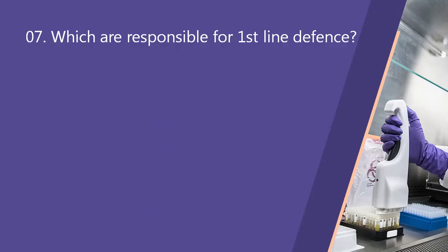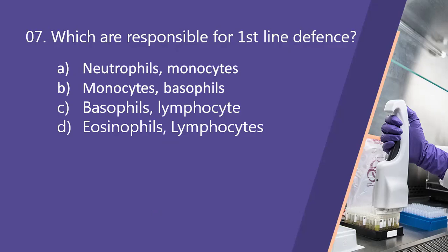Next question: which cells are responsible for first line defense? Option A, neutrophils and monocytes. Option B, monocytes and basophils. Option C, basophils and lymphocytes. Option D, eosinophils and lymphocytes. The right answer is option A, neutrophils and monocytes. Neutrophils help fight infection, while monocytes are responsible for phagocytosis — engulfment of bacteria — and cytokine production.